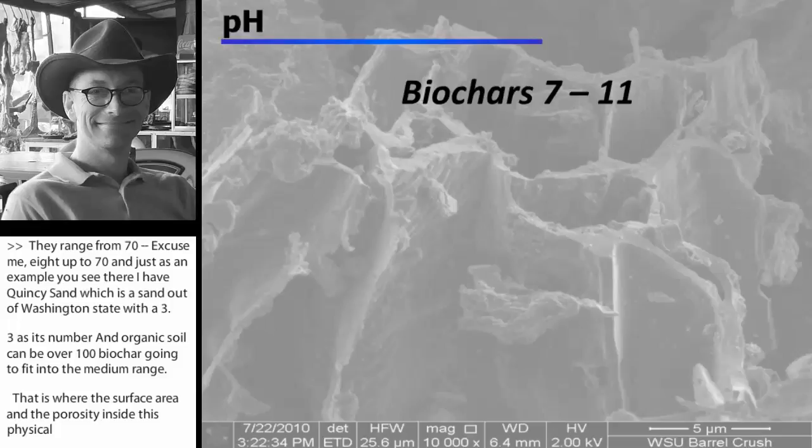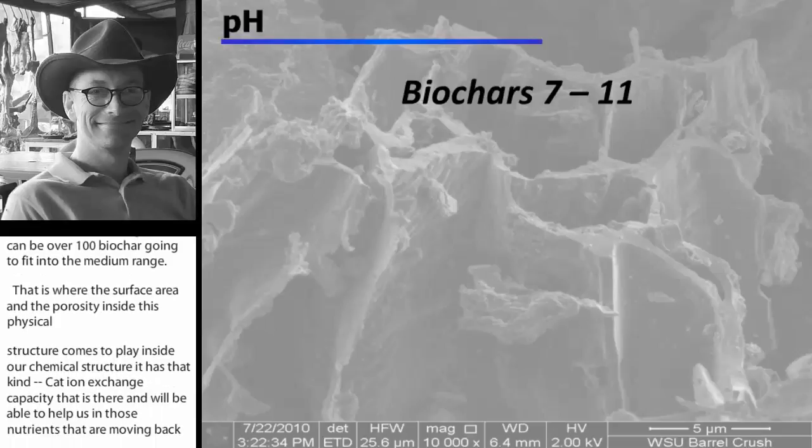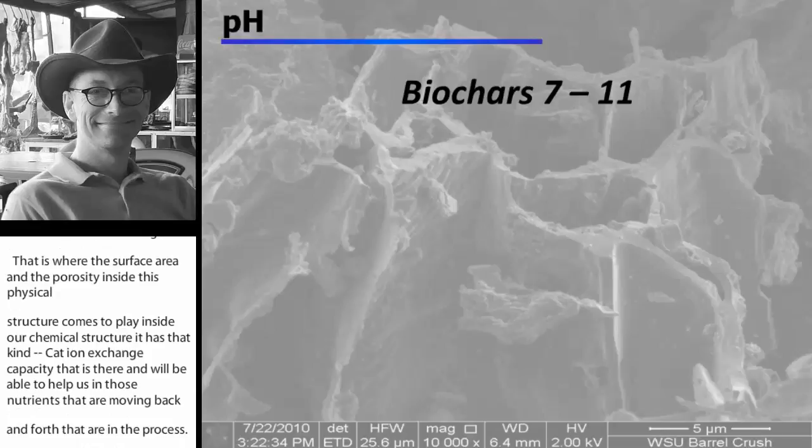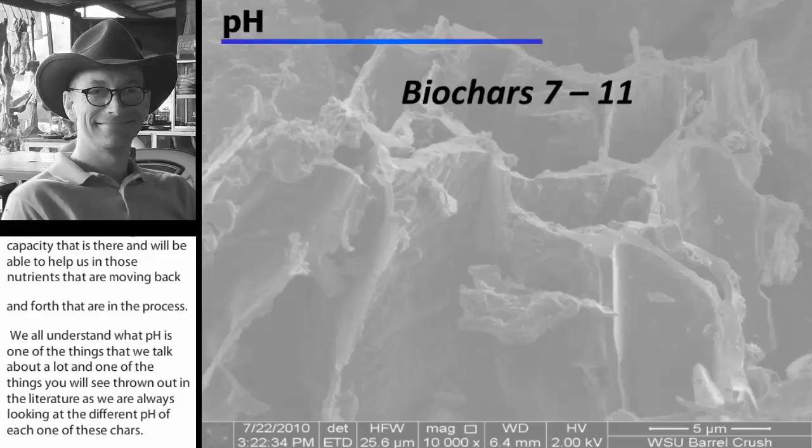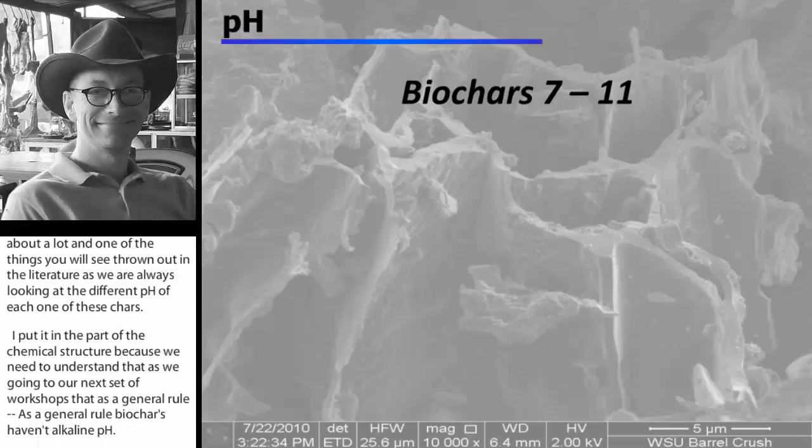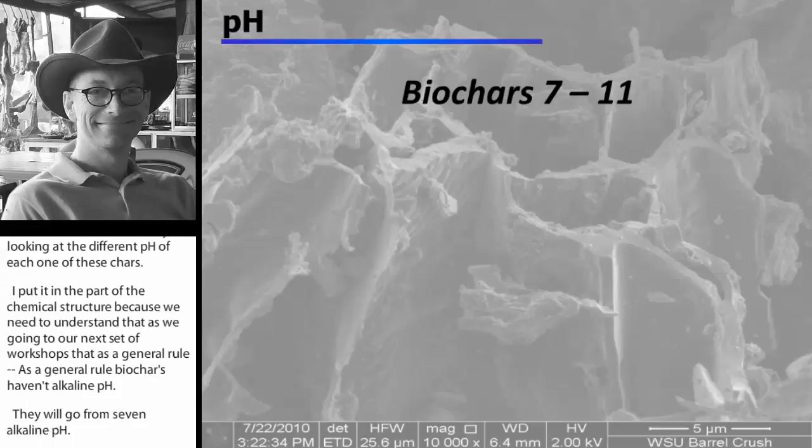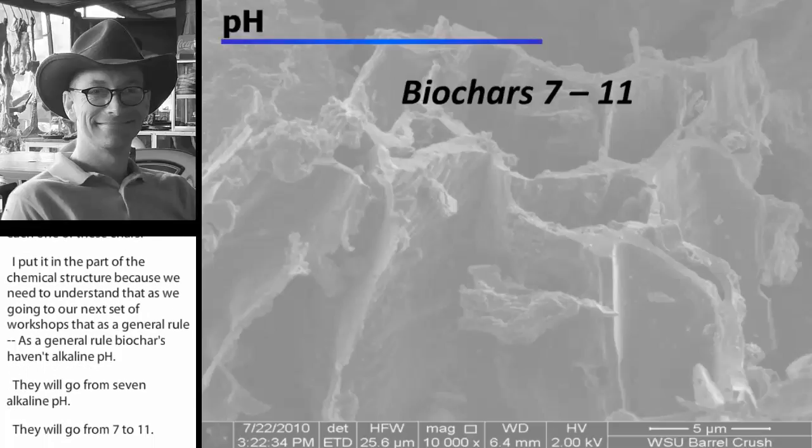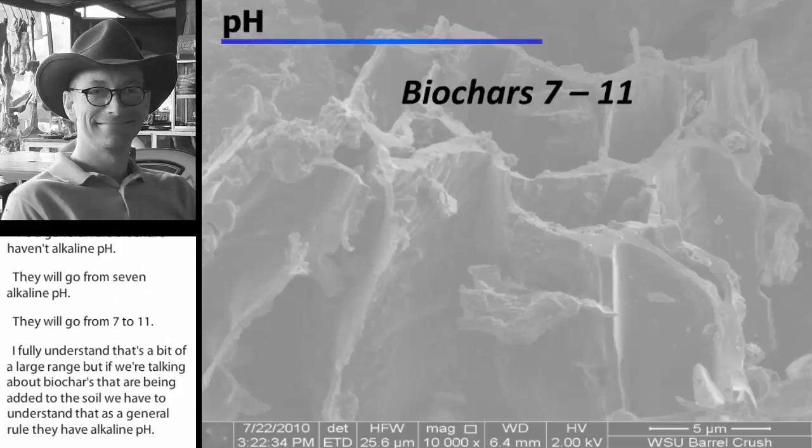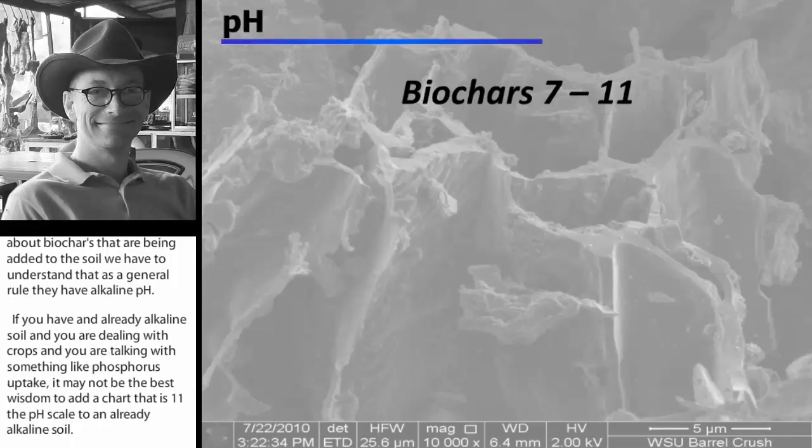We all understand what pH is, but one of the things that we talk about a lot is that we're always looking at the different pHs of each one of these chars. As a general rule, biochars have an alkaline pH, so they're going to go from 7 to 11. I know and I fully understand that that is a large range, but if we're talking about biochars that are being added to the soil, we have to understand that as a general rule they have alkaline pH. So if you have an already alkaline soil and you are dealing with crops and you're talking with something like phosphorus uptake, it may not be the best wisdom to add a char that's 11 in the pH scale to an already alkaline soil. Those are all different things that we need to take in effect. That's why we like to cover it as part of those universals.